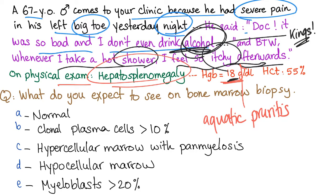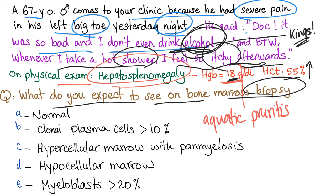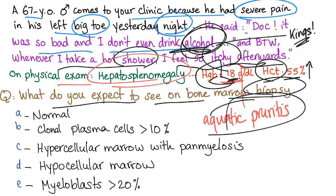Hemoglobin is 18 — very high. Hematocrit is also elevated. What do you expect on bone marrow biopsy? Options: normal; clonal plasma cells more than 10%; hypercellular marrow with panmyelosis; or hypocellular marrow or myeloblasts more than 20%. The diagnosis here is polycythemia vera — aquagenic pruritus, increased hemoglobin and hematocrit, hepatosplenomegaly, and low EPO.